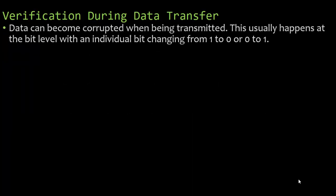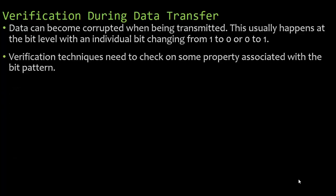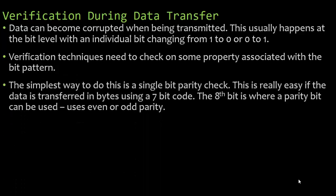During data transfer, data can become corrupted when being transmitted. This usually happens at the bit level — an individual bit changes from one to zero or zero to one. Verification techniques need to check some property associated with the bit pattern. The simplest method is a single-bit parity check. If data is transferred in bytes using a seven-bit code, the eighth bit can be used as a parity bit, using even or odd parity.